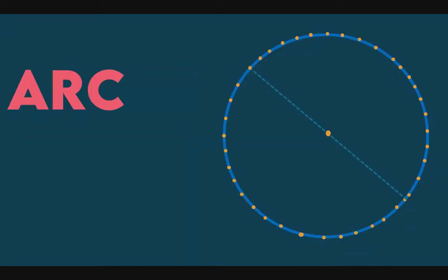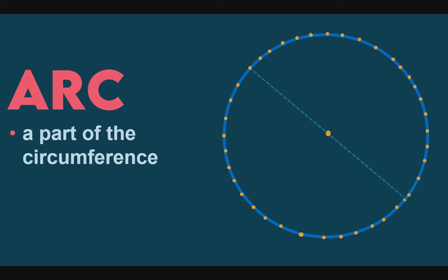We can say that circumference is equal to pi times diameter. Next, let us define arc. Arc is a part of the circumference — just like this one, it's not the whole circle, just a part.